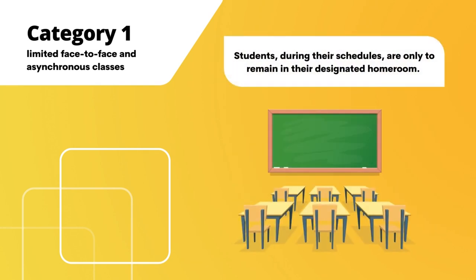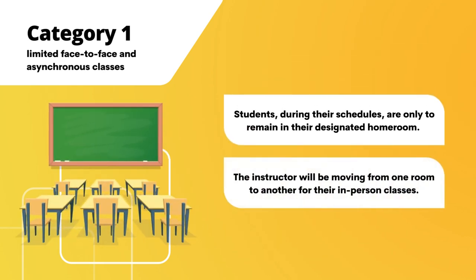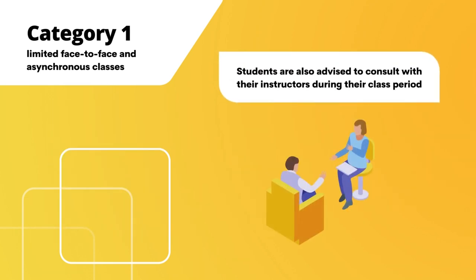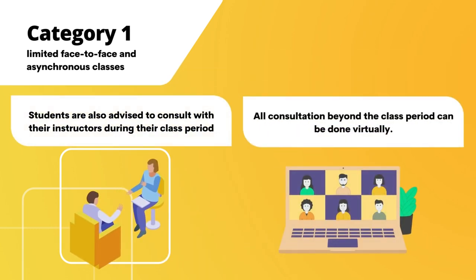Since all subjects of Category 1 classes are to be held on campus, students during their schedules are only to remain in their designated home room. To restrict student mobility, the instructor will be moving from one room to another for in-person classes. Students are also advised to consult with their instructors during their class period, instead of entering faculty rooms or offices, to minimize contact and mobility. All consultation beyond the class period can be done virtually.